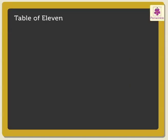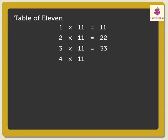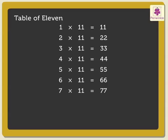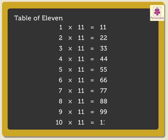The table of 11: 1×11 is 11, 2×11s are 22, 3×11s are 33, 4×11s are 44, 5×11s are 55, 6×11s are 66, 7×11s are 77, 8×11s are 88, 9×11s are 99, 10×11s are 110.